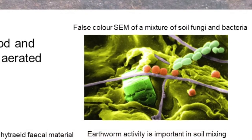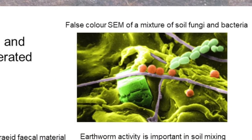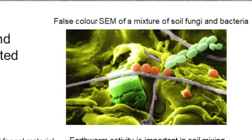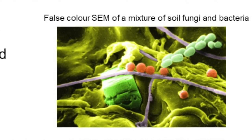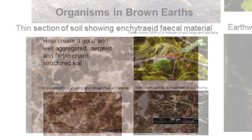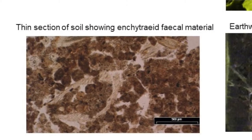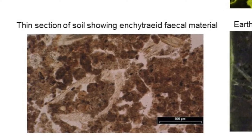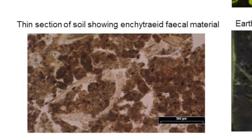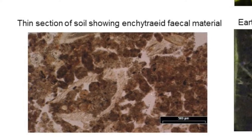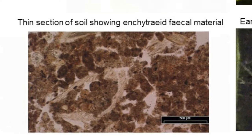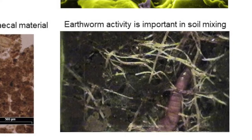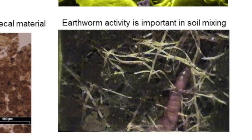The top-right picture shows a false colour scanning electron micrograph of a mixture of soil fungi and bacteria lying over the soil minerals. The picture on the left shows a thin section of soil with faecal material from an enchytraeid worm. Enchytraeid worms are smaller than earthworms and they live by eating soil fungi and bacteria. The final picture shows an earthworm in amongst the roots in the soil.